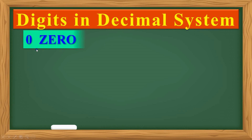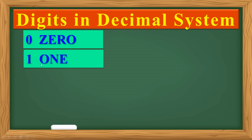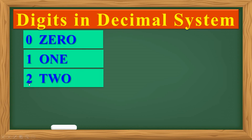One by one. First one is zero. Z-E-R-O. Zero. One. Two. T-W-O. Two.